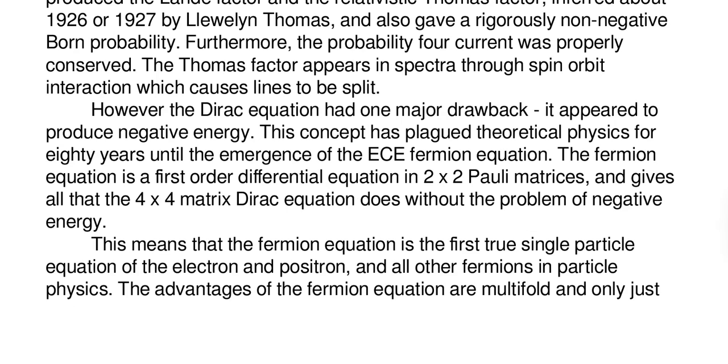The Fermion equation is a first order differential equation in 2x2 Pauli matrices and gives all that the 4x4 matrix Dirac equation does without the problem of negative energy. This means that the Fermion equation is the first true single particle equation of the electron and positron and all other fermions in particle physics.